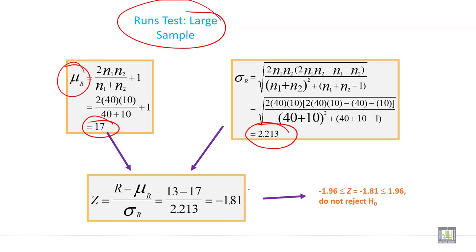So the Z value will be minus 1.81, and it is less than minus 1.96. So do not reject the null hypothesis. It will not go in the rejection area.